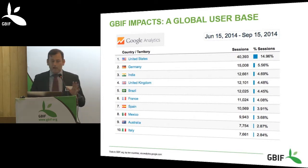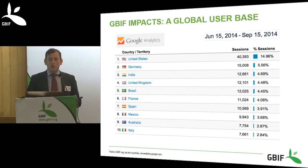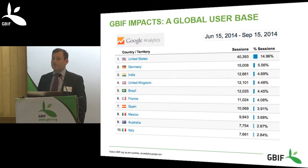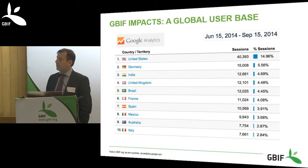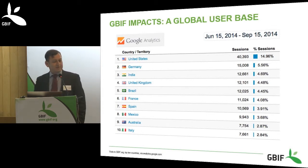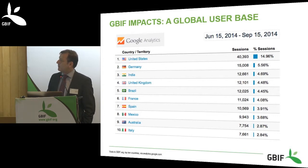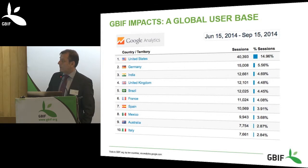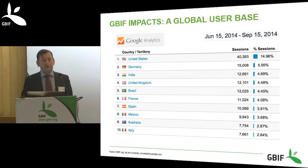To start with, if we look at our direct users in terms of who around the world is using the global portal gbif.org — we did this on Google Analytics just yesterday — it's quite interesting to see how visits to the portal are divided up around the world. It's not necessarily what you might have predicted. So it's US first, Germany, India — our hosts are the third biggest users in the last three months — with Brazil next, and also France, Spain, Mexico, Australia, and Italy in the top 10.